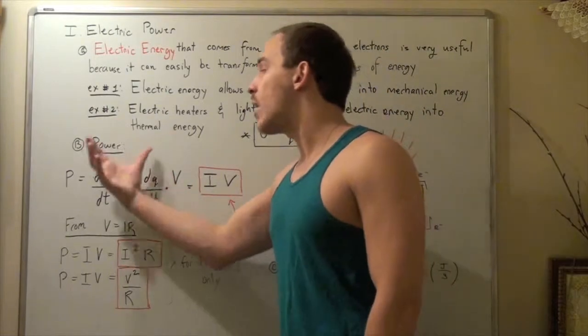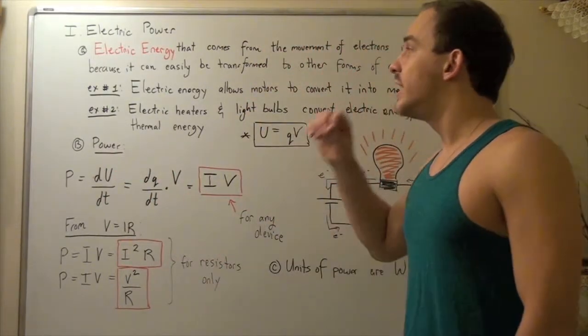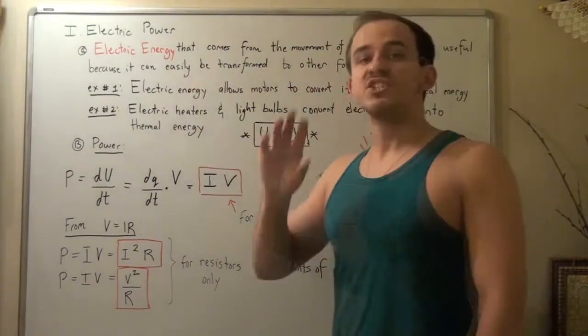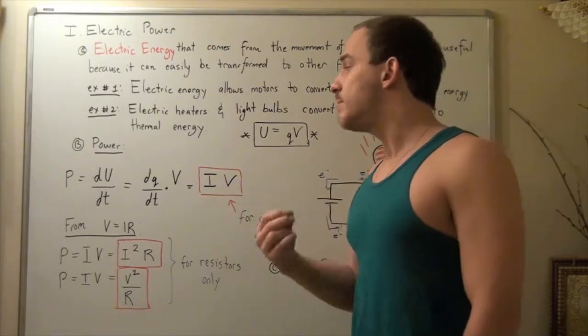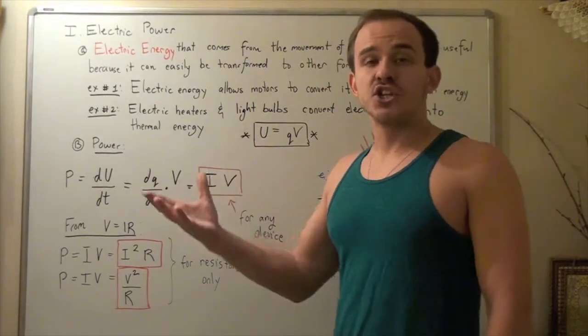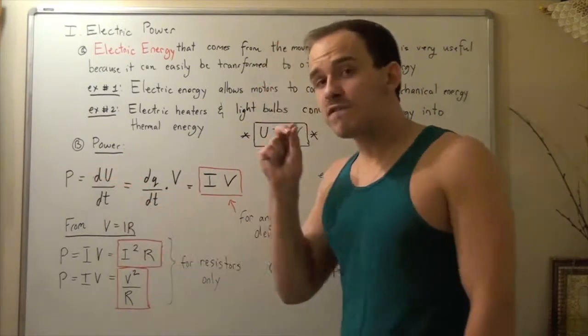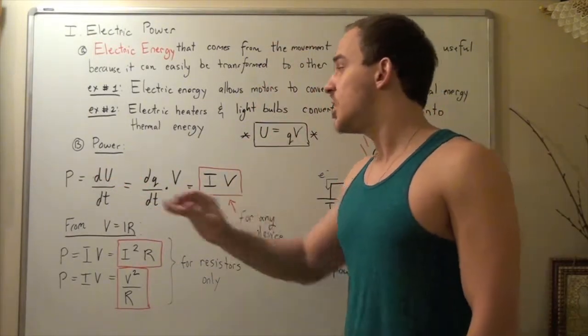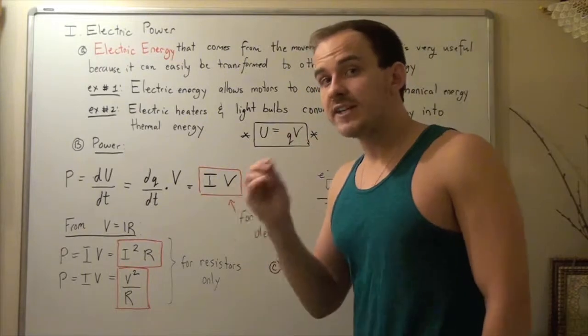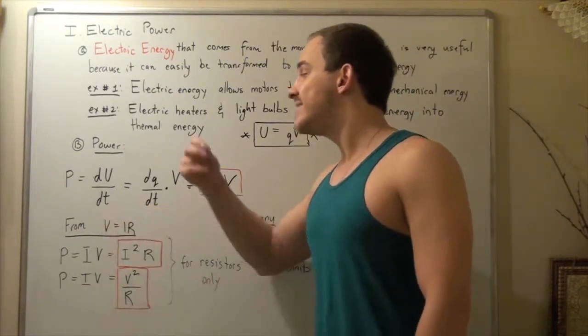Now, let's talk about power. Let's talk about power in terms of electric energy. So power in itself is simply energy, or a change in energy divided by change in time. So, dU, or a very tiny change in energy, over dt, a very tiny change in time, is equal to...